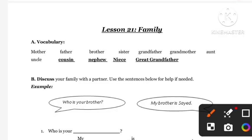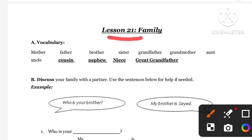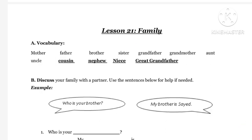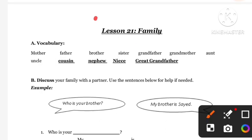Hello everyone, hope you all are doing well. Today's video is all about FEA lesson 21 and the topic is Family. Both urban and rural books are the same, so don't be confused.